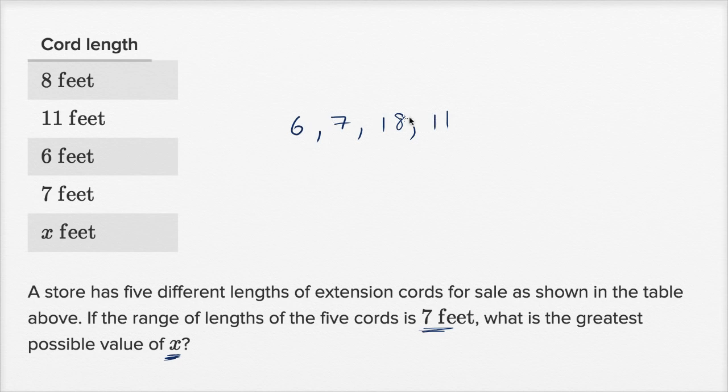So if these were just the four types of cords, the range here would be the high minus the low. It would be 11 minus six, which is equal to five.